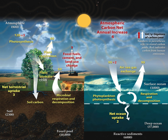The carbon cycle is the biogeochemical cycle by which carbon is exchanged among the biosphere, pedosphere, geosphere, hydrosphere, and atmosphere of the Earth. Carbon is the main component of biological compounds as well as a major component of many minerals such as limestone. Along with the nitrogen cycle and the water cycle, the carbon cycle comprises a sequence of events that are key to make Earth capable of sustaining life.